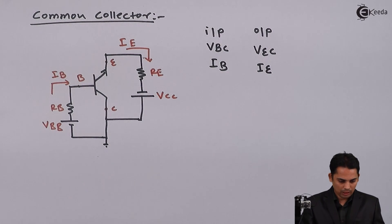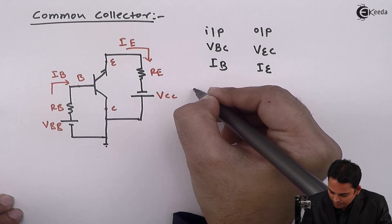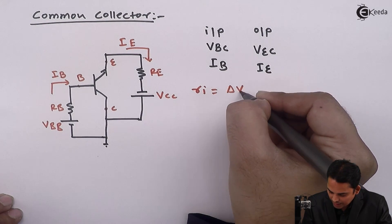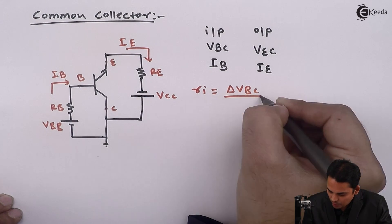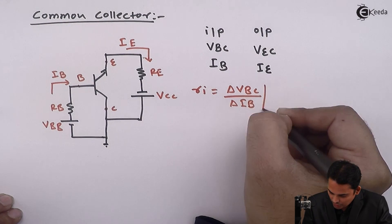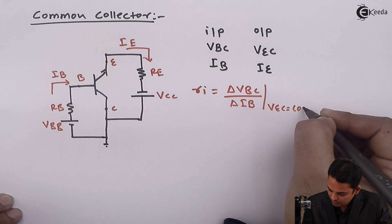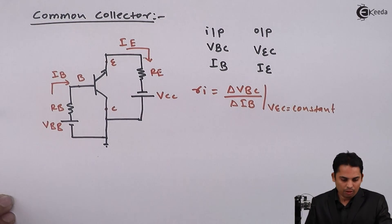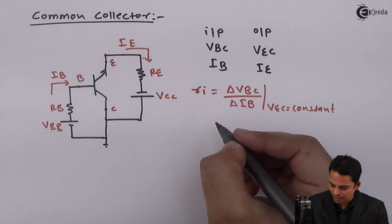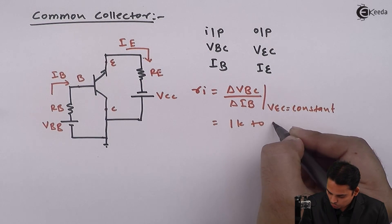The input impedance of the common collector amplifier is RI, equal to the change in input voltage delta VBC divided by the change in input current delta IB, keeping the output voltage constant. The value of RI in the common collector amplifier is very high — in the range of 1 kilo ohm to 5 kilo ohms.